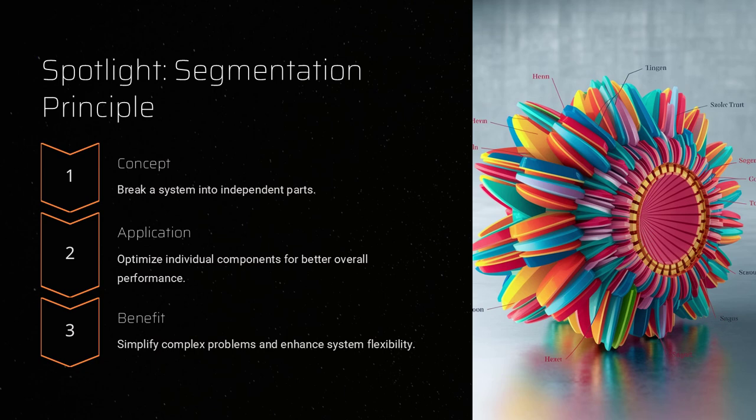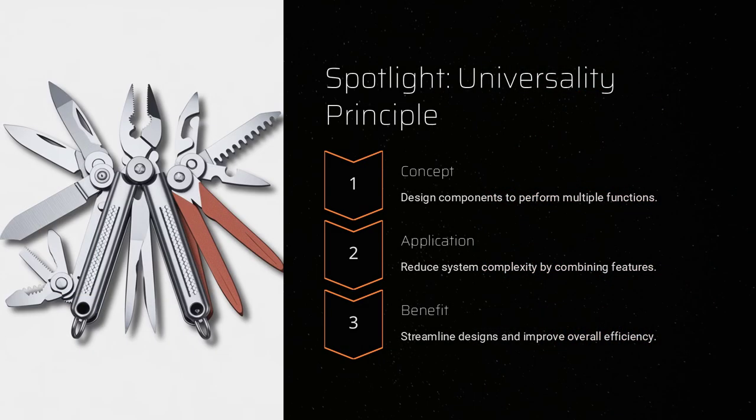Moreover, TRIZ doesn't stop at merely providing principles. It also offers analytical tools such as the contradiction matrix and the concept of the ideal final result. The contradiction matrix helps identify which inventive principles are most likely to overcome specific conflicts, making the problem-solving process more efficient and focused. Meanwhile, the ideal final result pushes you to envision the perfect solution — a state where a problem is resolved without introducing new issues. This forward-thinking mindset prompts questions like: what would it look like if we could design a system that eliminates the very problem we're trying to solve?